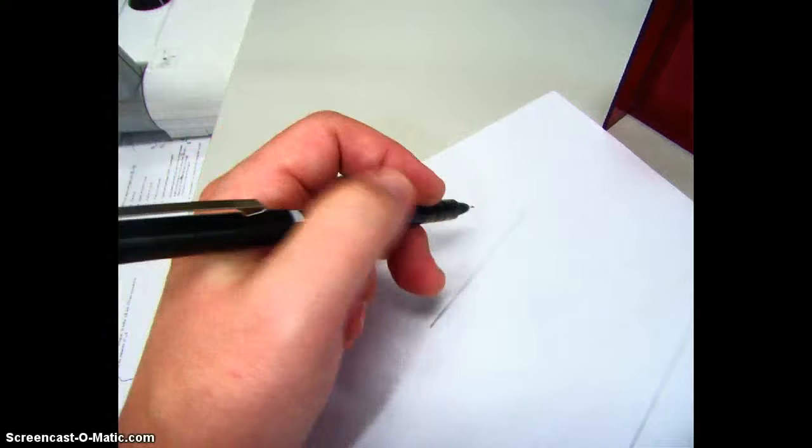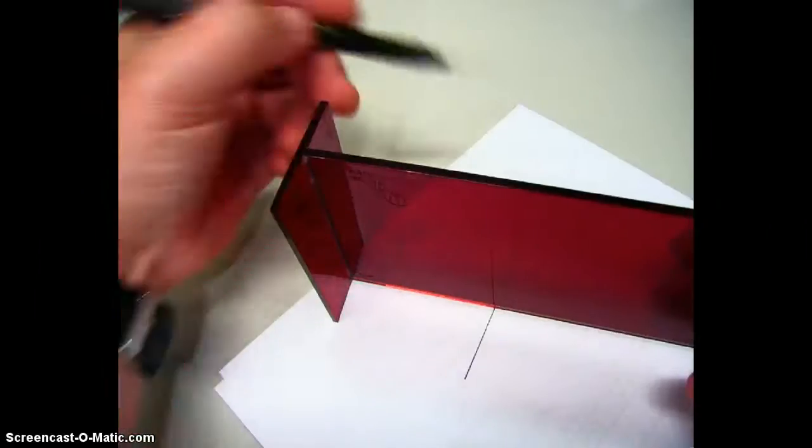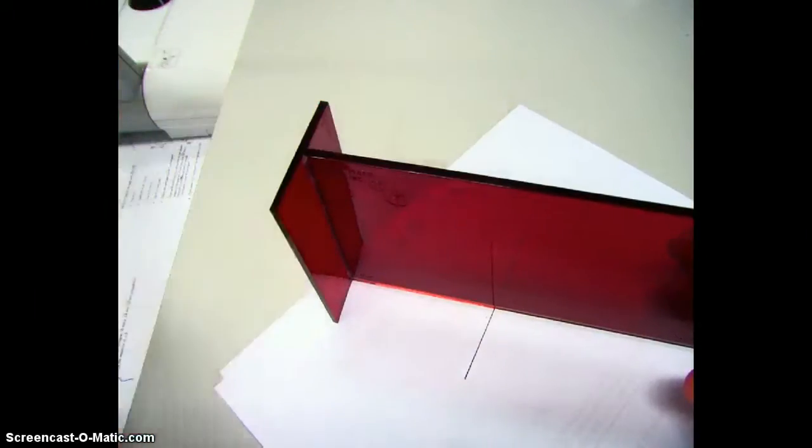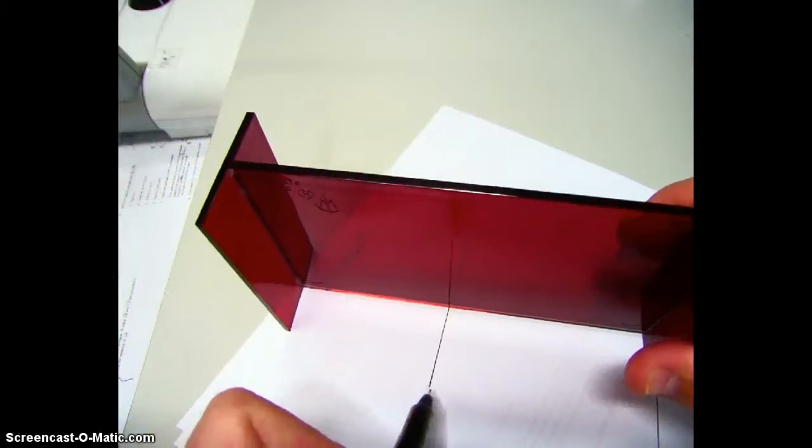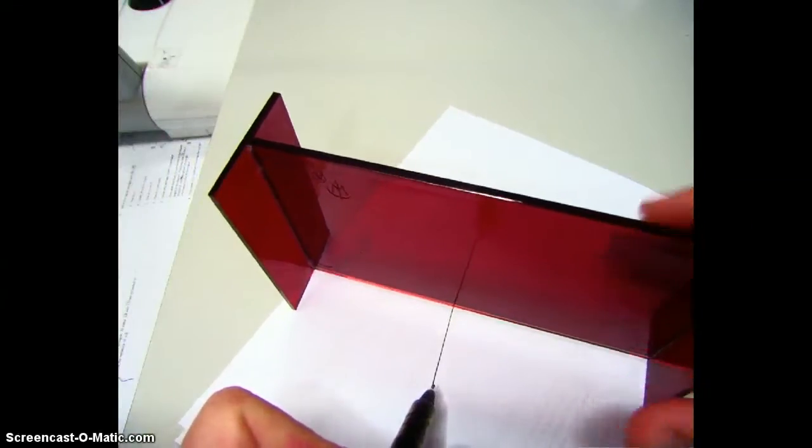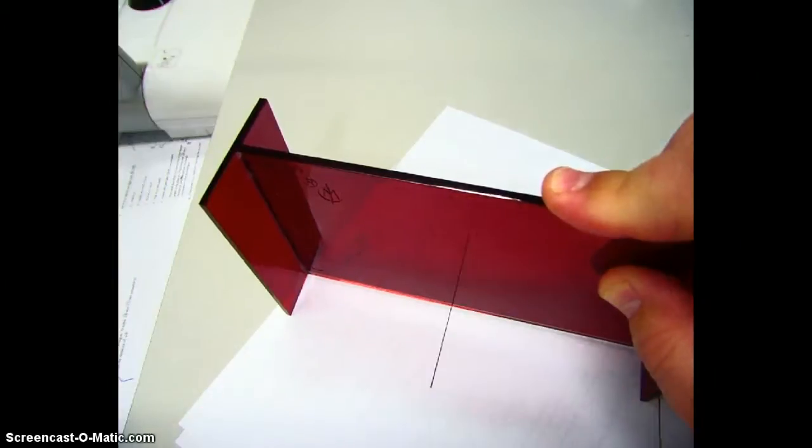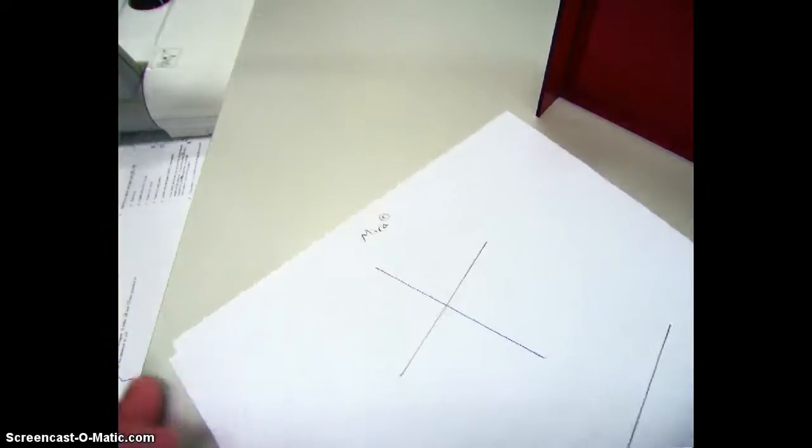One of the most common constructions you know we do is bisecting a segment. And it's really easy with the mirror. I just line up, I'm looking through the mirror to try to see this point that's on the real paper. And I move my mirror until this point is reflected directly on that point over there. Looks like it is for me now. So there's my perpendicular bisector. Easy as that.